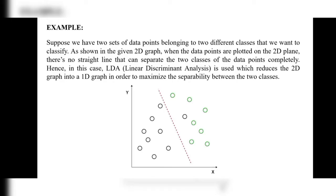For example, we have two data points belonging to two different classes that we want to classify. A two-dimensional graph is given. Before using Linear Discriminant Analysis, it does not recognize how to separate the two classes. This is a 2D graph and we need to get into a 1D graph with separability between the two classes, but without using LDA we cannot achieve that. When we use LDA, we can reduce the 2D graph into a 1D graph in order to maximize the difference between the means of the two classes.